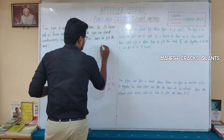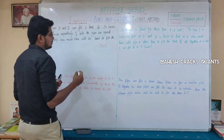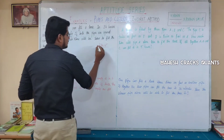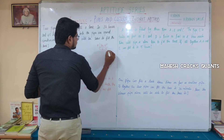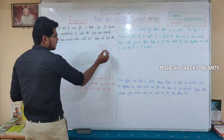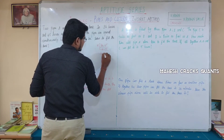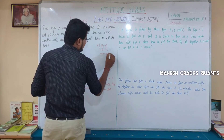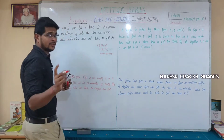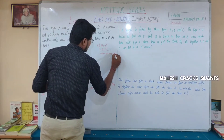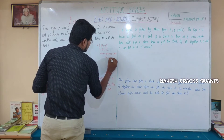LCM of 36 and 45. The common factor between these two is 9. So 36 = 9×4 and 45 = 9×5. LCM = 9 × 4 × 5 = 180. So total capacity is 180 litres.